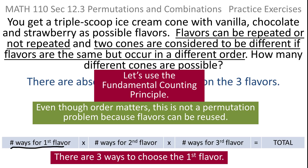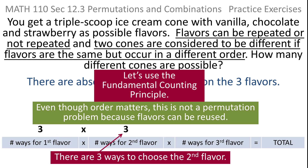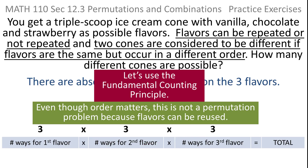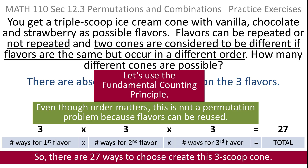When I go to choose the first flavor, I have three choices — I can choose any of the three flavors: strawberry, chocolate, vanilla. But because flavors can be repeated, I have those same three choices for the second flavor and for the third flavor. So by the fundamental counting principle, there are going to be three times three times three. There are going to be 27 different ways to build a cone with three scoops if flavors can be repeated and if the order the flavors appear in the cone matters.